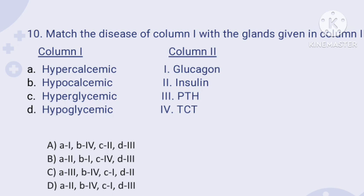Question number ten: match the disease in column one with the glands in column two. Hypercalcemic hormone increases calcium level — that is parathormone (PTH), so A matches 3. Hypocalcemic hormone decreases calcium level — that is thyrocalcitonin (TCT), matching B to 4. Hyperglycemic hormone increases blood glucose — that is glucagon. Hypoglycemic hormone decreases blood glucose — that is insulin. The correct answer is option C: A3, B4, C1, D2.